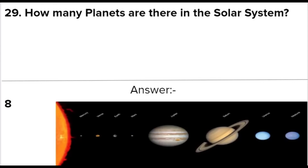Next question: How many planets are there in the solar system? Answer: 8. They include Mercury, Venus, Earth, Mars, Jupiter, Saturn, Uranus, and Neptune.